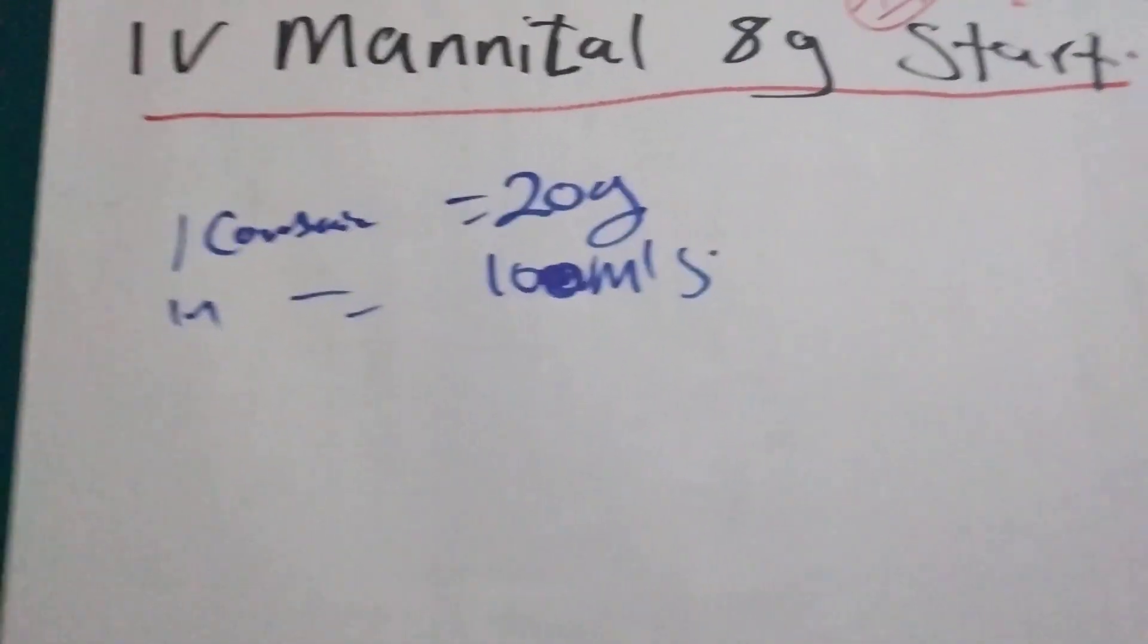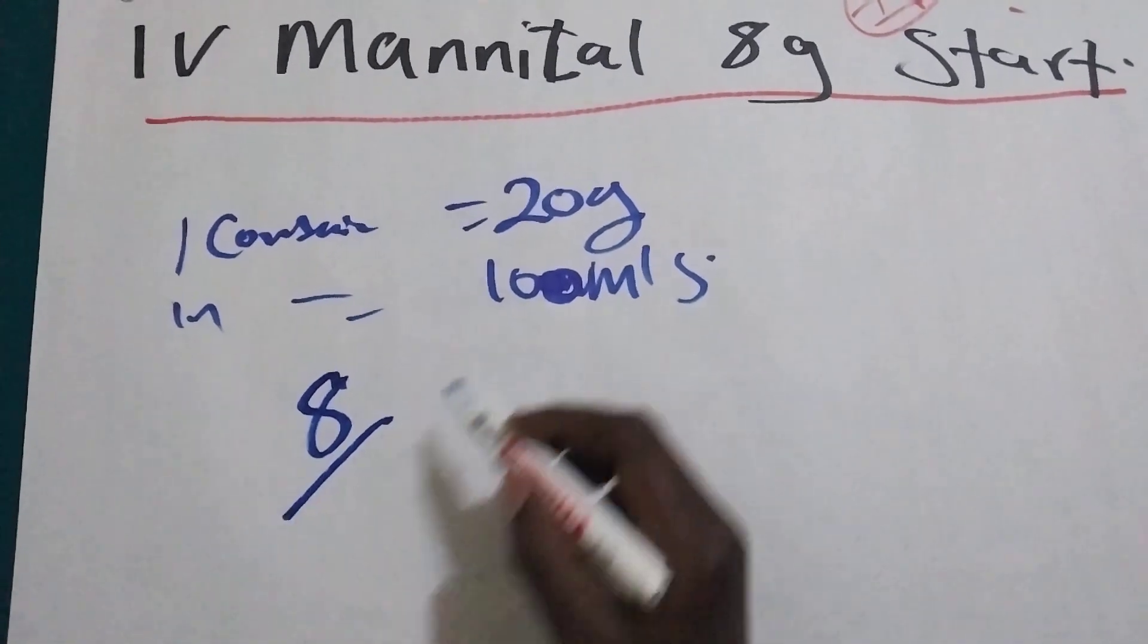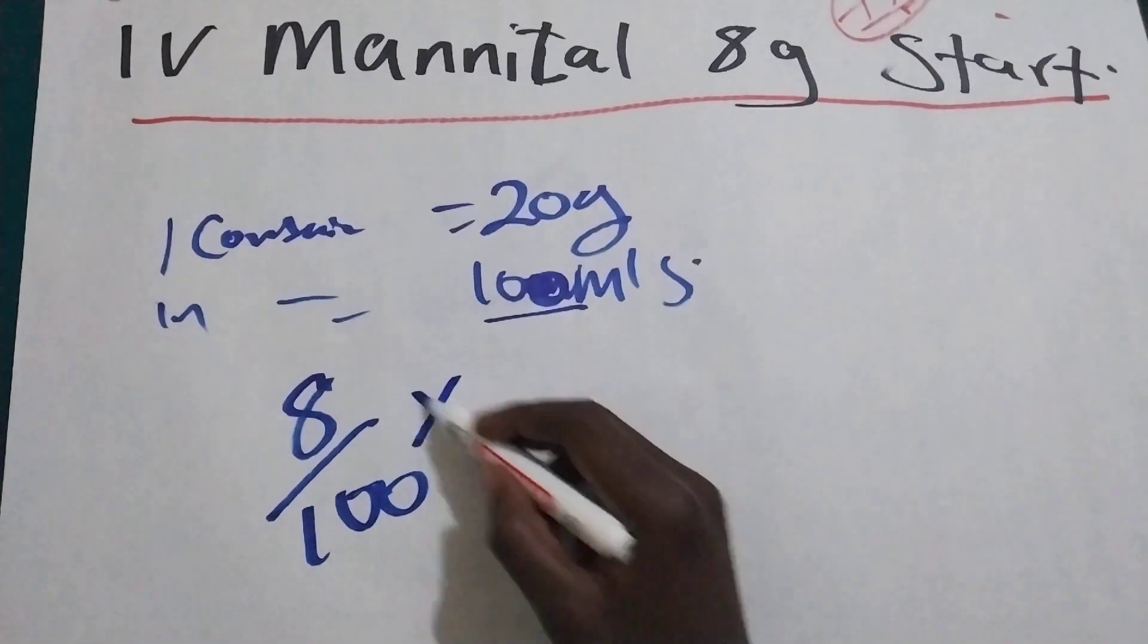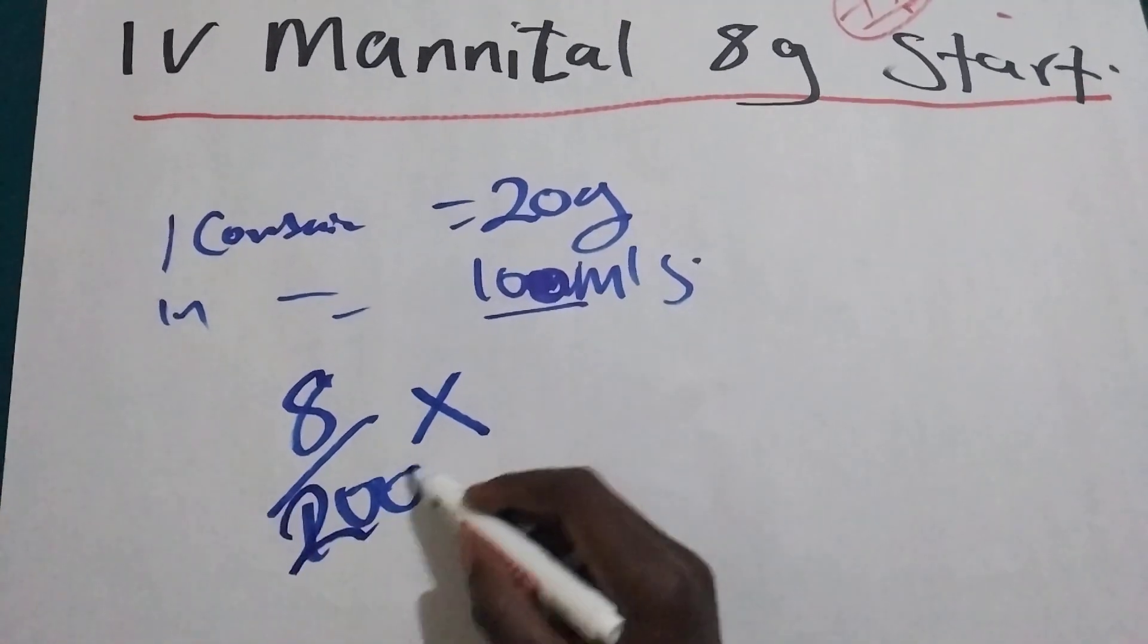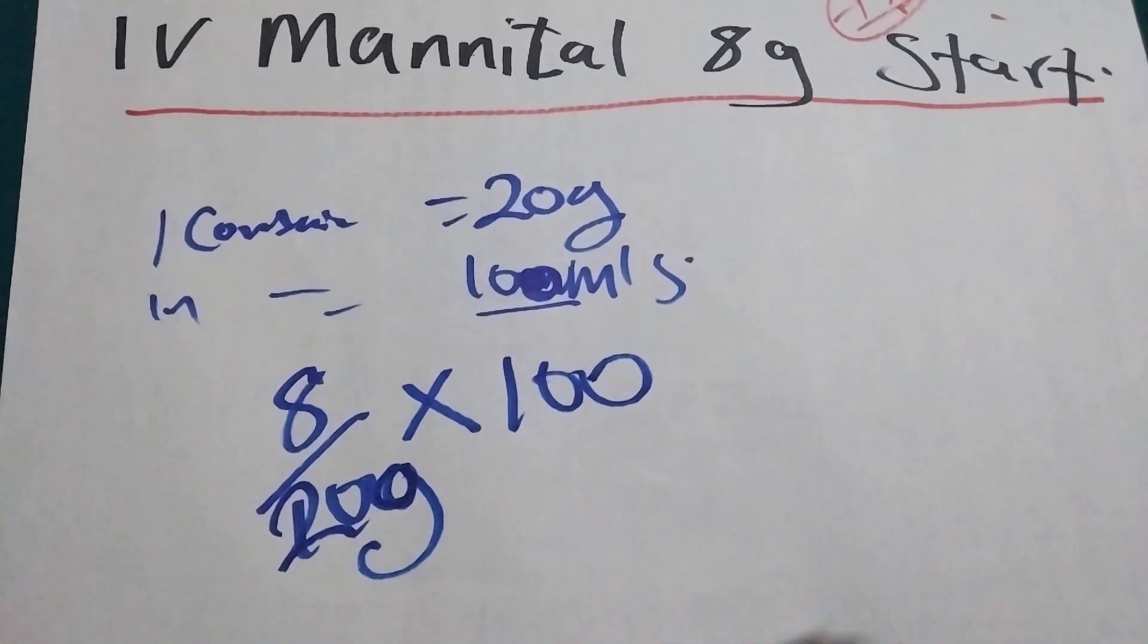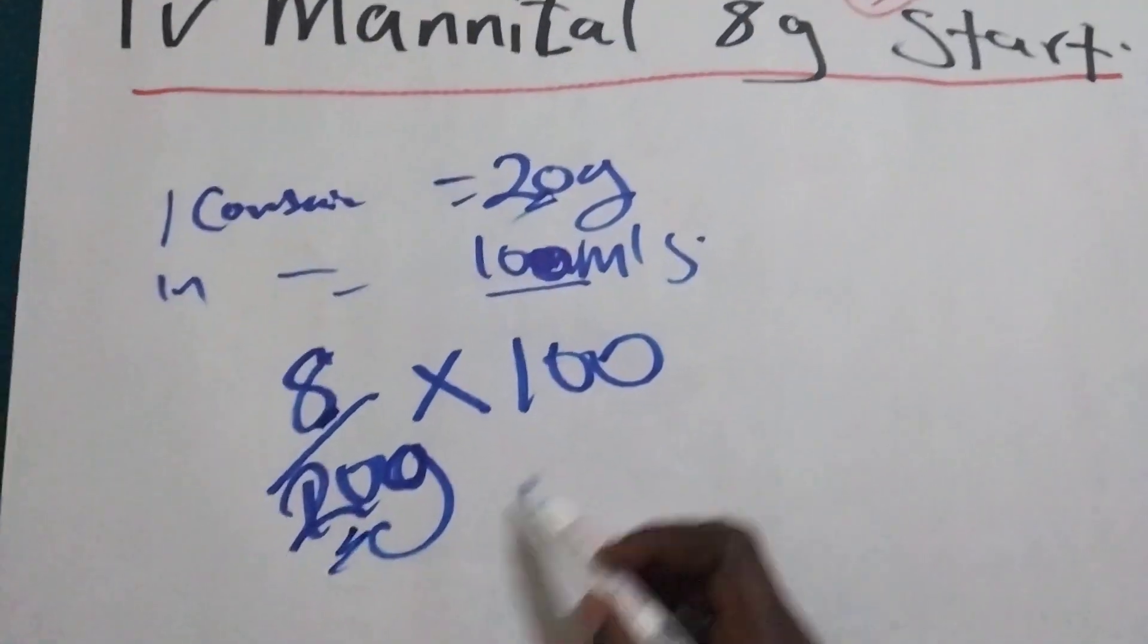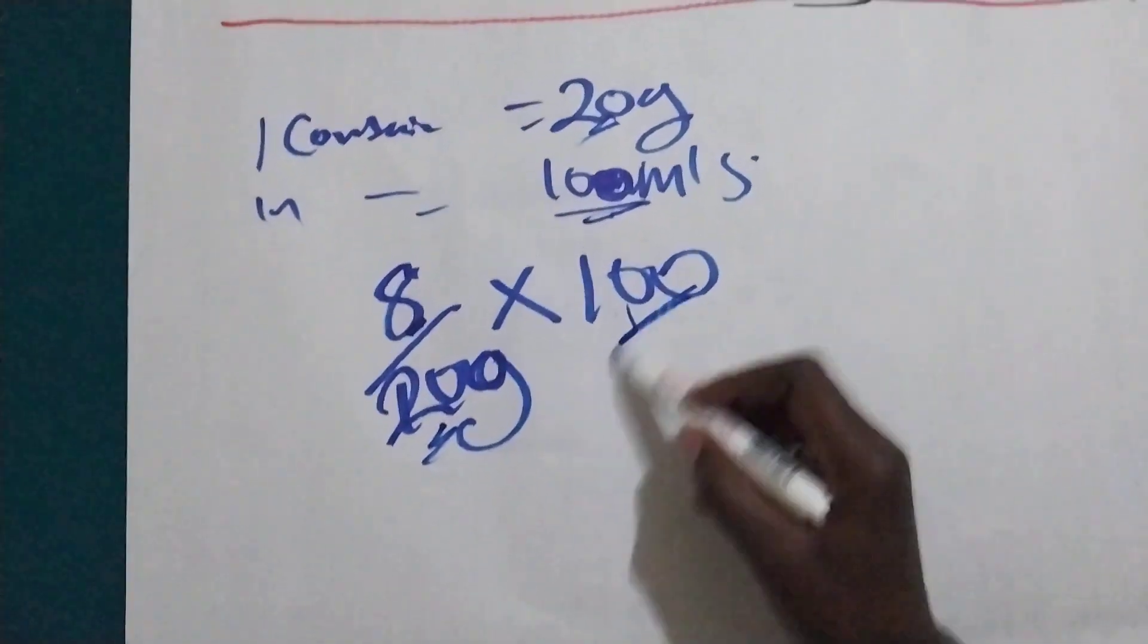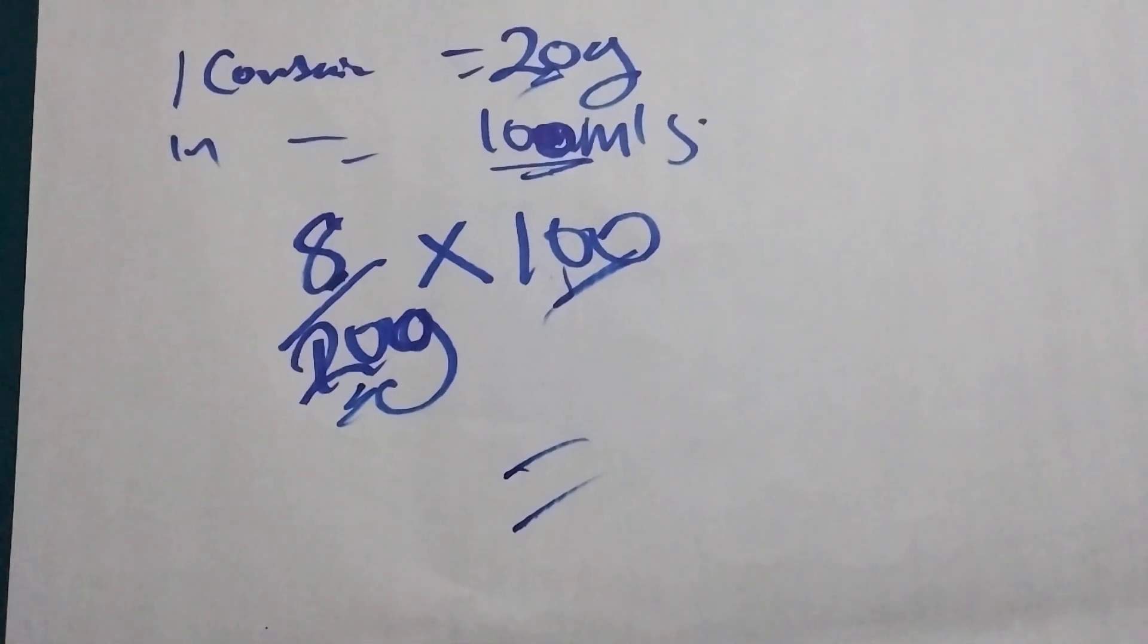We are going to use the prescribed amount, that is 8, divided by the base, which is 20, times the dilution, which is 100. From the calculator, 8 divided by 20 times 100.